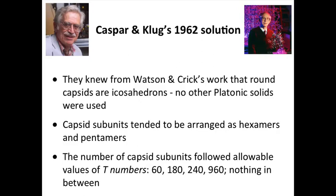They also found from their structural work that the subunits that made up the particles tended to be arranged in groups of five or groups of six, which we call pentamers or hexamers. And then finally, the number of subunits, as I told you before, were multiples of 60. And these are called T numbers, which we'll explain in a moment. And again, there was nothing in between.